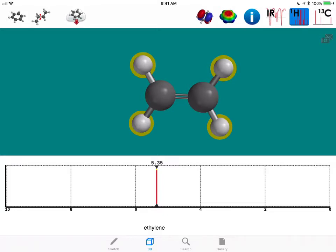And notice now the difference that the chemical shift of those protons is at 5.35 parts per million. So the fact that these hydrogens are bonded to an SP2 hybridized carbon significantly shifts those...